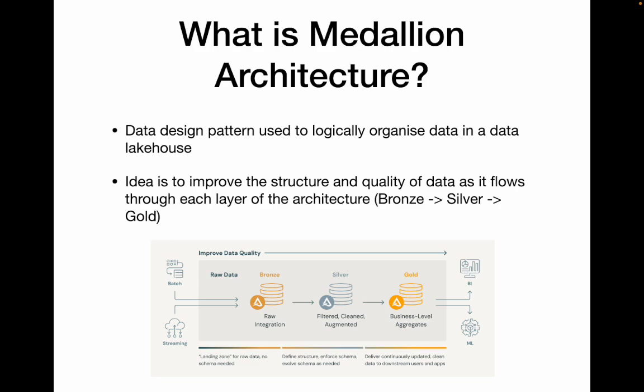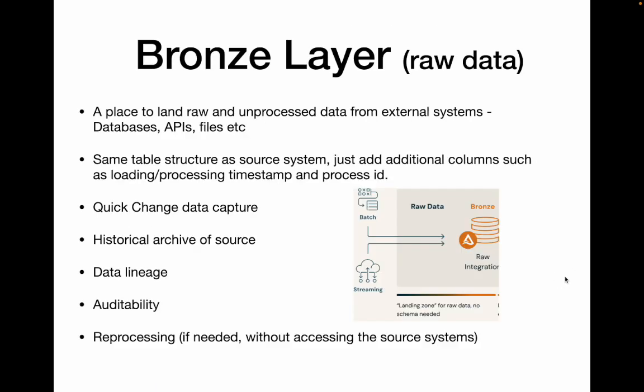Here is the pictorial representation of those three layers. We'll be breaking down this picture and learning about each layer step by step. The first layer is the bronze layer. Here raw data is stored. The data comes from various sources and it hasn't been processed. You could be receiving data from different databases, API calls, or Excel files. You try to maintain the same stable structure as the source system, and you can add additional columns such as the processing timestamp and a process ID.